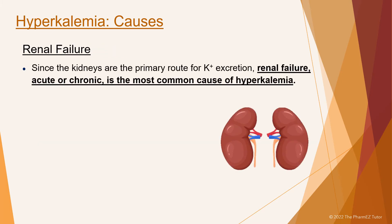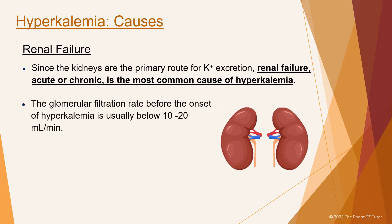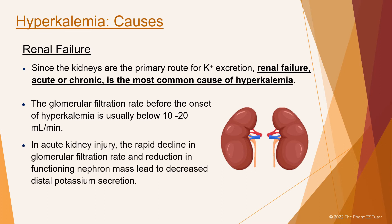Renal failure — since the kidneys are the primary route for potassium excretion, renal failure, acute or chronic, is the most common cause of hyperkalemia. The glomerular filtration rate before the onset of hyperkalemia is usually below 10 to 20 mLs per minute. In acute kidney injury, the rapid decline in glomerular filtration rate and reduction in functioning nephron mass lead to decreased distal potassium secretion.